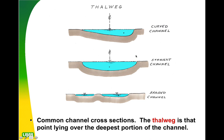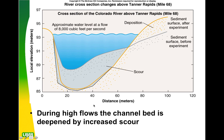In a braided channel, these are typically slower-moving channels where the amount of water that flows through changes annually or seasonally. They're relatively shallow but pretty much uniform all the way across. During high flows, a river is most effective at eroding, because there's more water to carry more sediment and water is moving faster, giving it more power to erode.